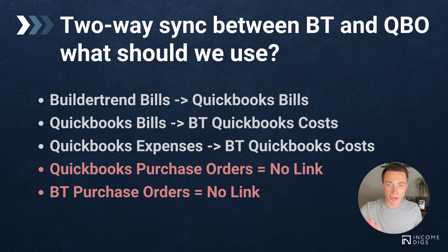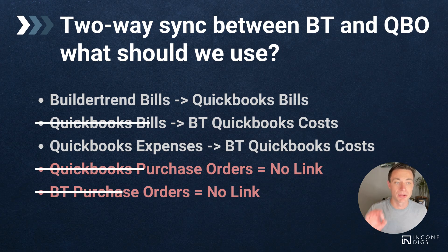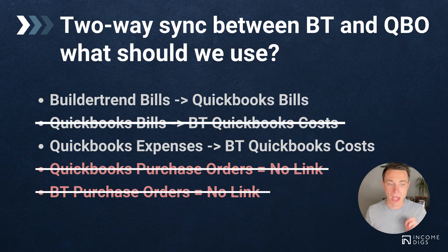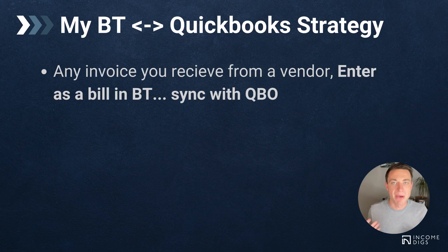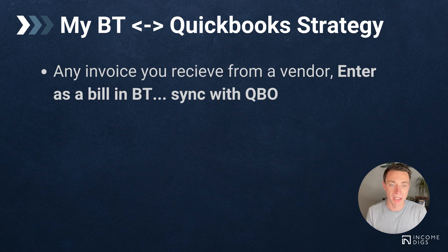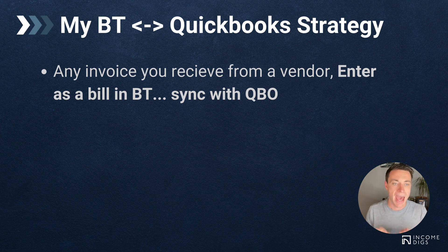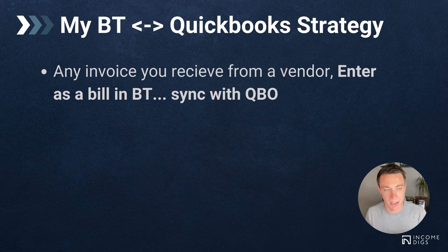If you're using purchase orders in either system, understand that the two do not sync together — and I don't think they should. We should do all purchase order work in one system, and I personally think that should be BuilderTrend. With all of this in mind, my suggestion is to use BuilderTrend bills syncing to QuickBooks bills, and QuickBooks expenses syncing to BuilderTrend QuickBooks costs. Any invoice we receive from a vendor with payment terms should be entered as a bill within BuilderTrend and synced to QuickBooks.